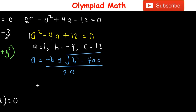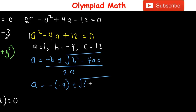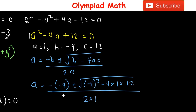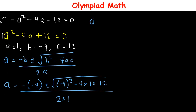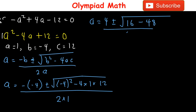Substituting: a = (-(-4) ± √((-4)² - 4·1·12)) / (2·1) = (4 ± √(16 - 48)) / 2 = (4 ± √(-32)) / 2.